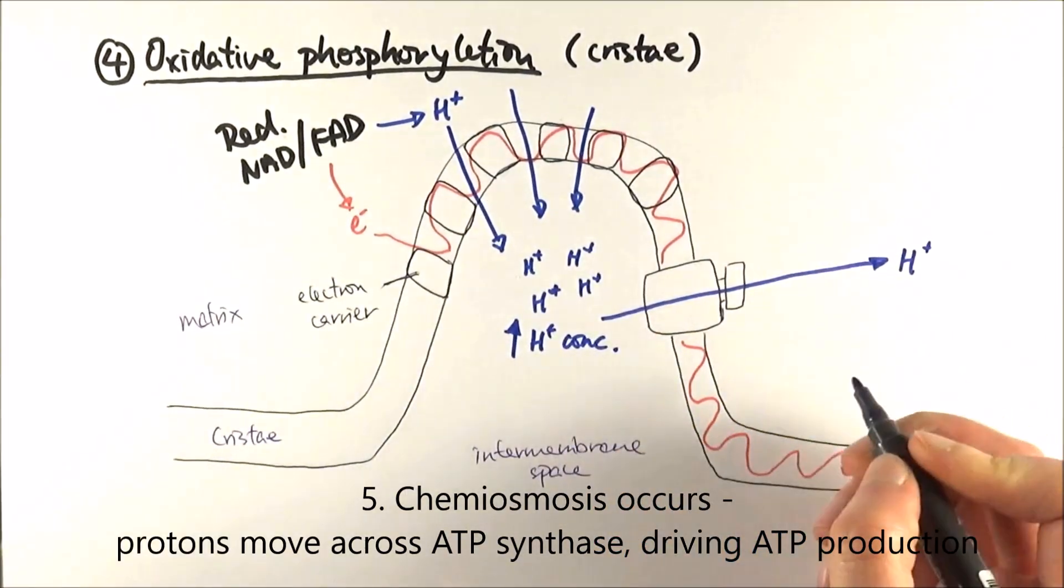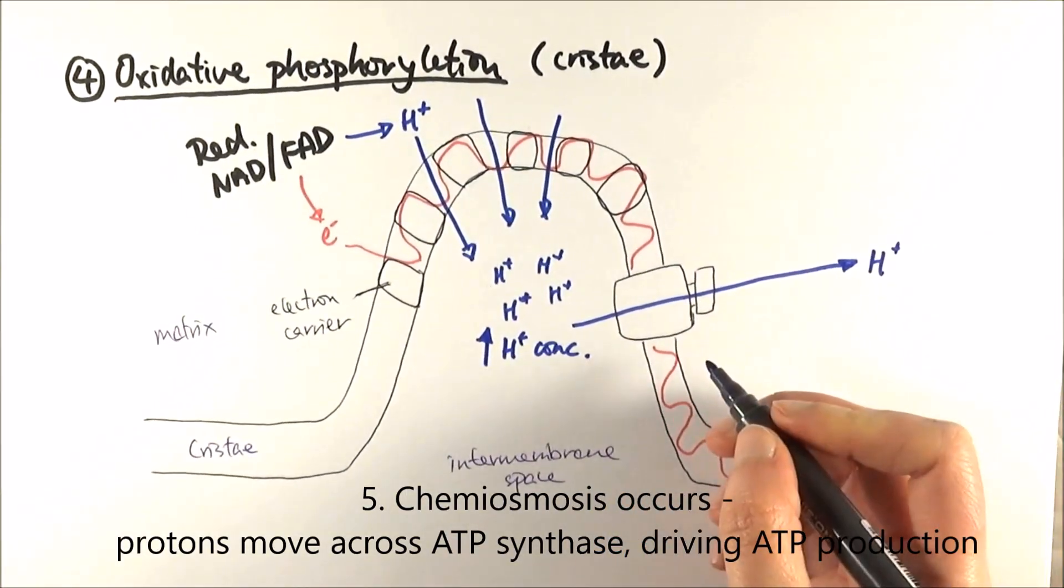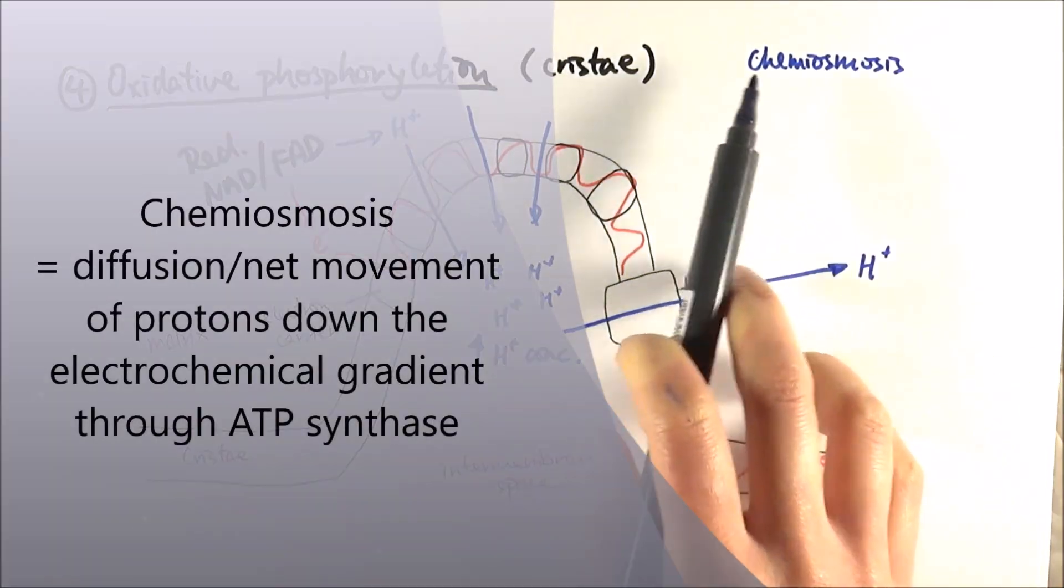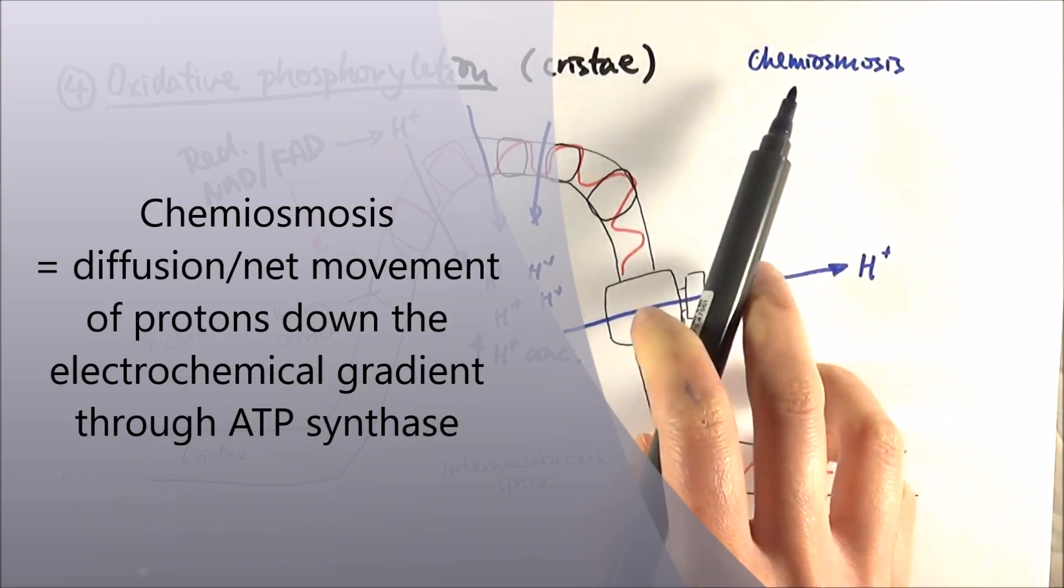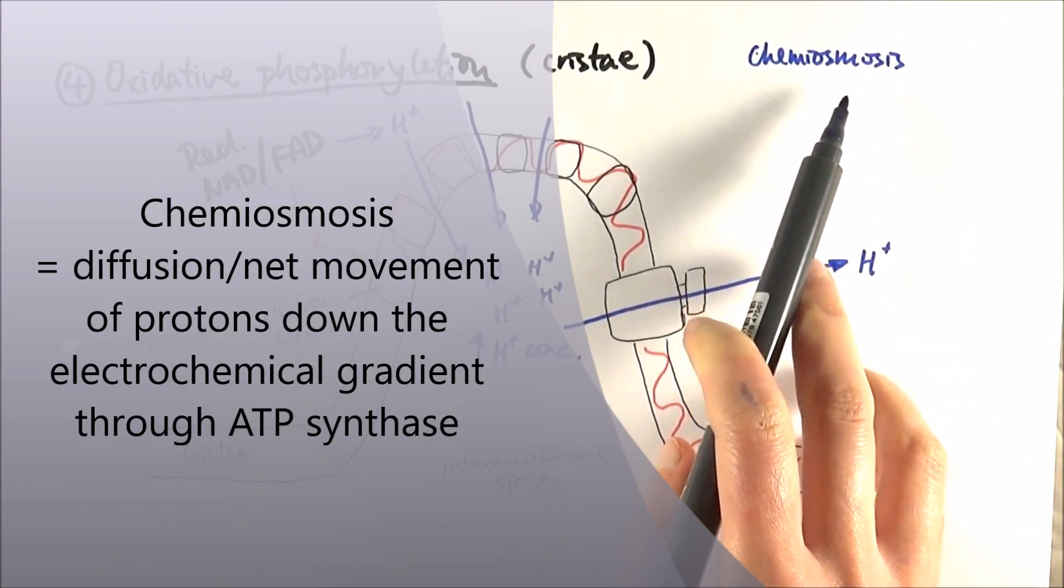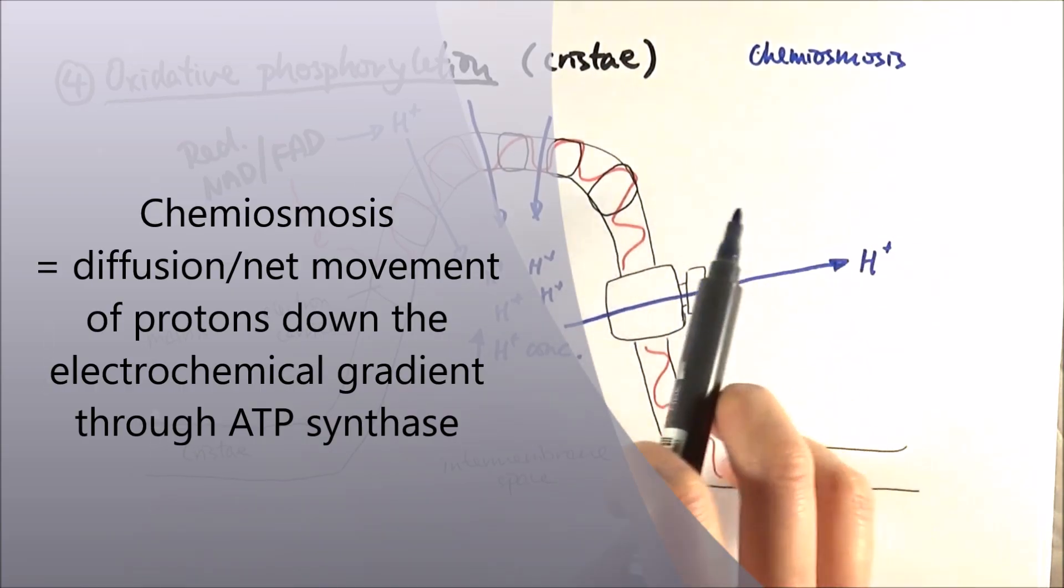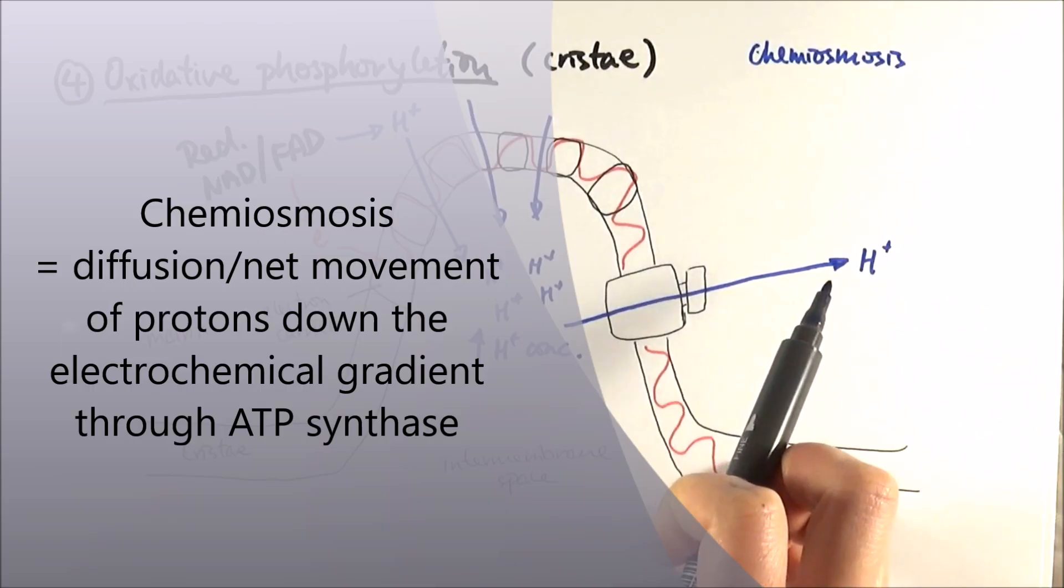And we call this diffusion of protons through ATP synthase, chemiosmosis. Definition of chemiosmosis: chemio, referring to chemicals, which is protons here. Osmosis, which is normally the diffusion of water, but in this case, it's the diffusion of protons down the proton concentration gradient through ATP synthase.